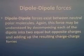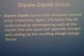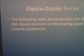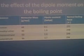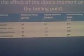The dipole-dipole force may be understood by decomposing each dipole into two equal but opposite charges and adding up the resulting charge-charge forces. Here's a table of dipole moment and its effect on boiling point: propane has a dipole moment of 0.1 debye and a boiling point of 231 K. Chloromethane, although its molecular mass increases by only six grams per mole, has a dipole moment of nearly double at 2 debye, and its boiling point increases to 249 K.